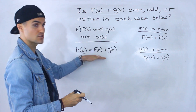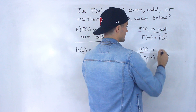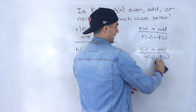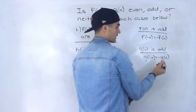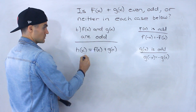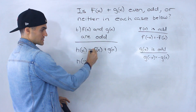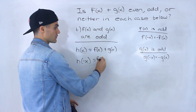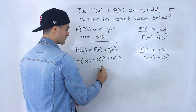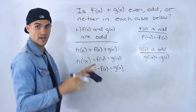If f of x is odd and g of x is odd, that means f of negative x equals negative f of x, and g of negative x equals negative g of x — the fundamental symmetry properties. So h of negative x equals f of negative x plus g of negative x, which gives us negative f of x plus negative g of x.